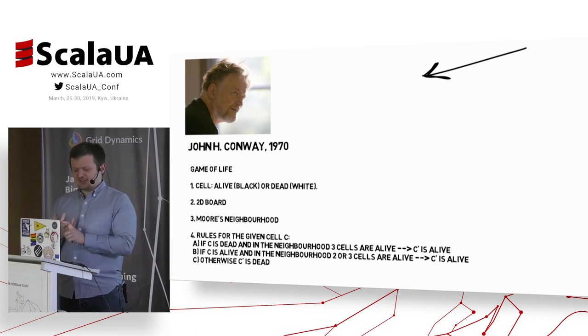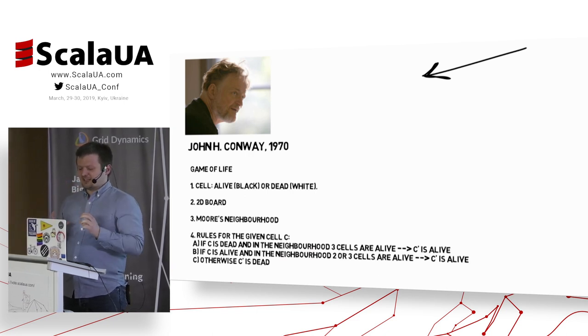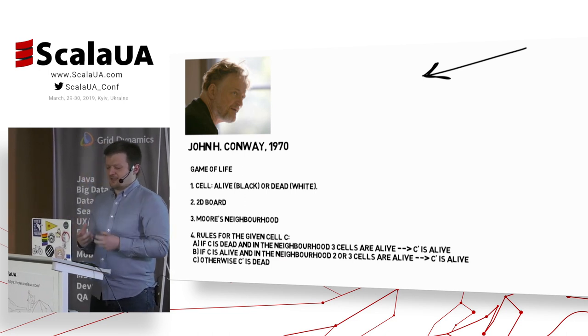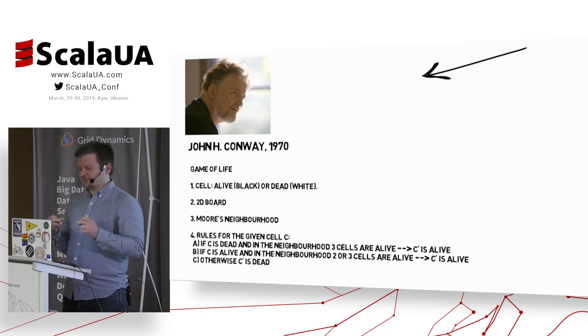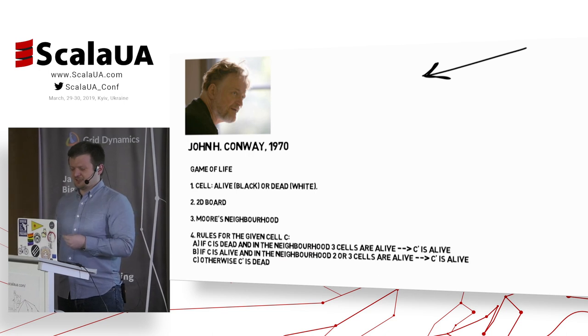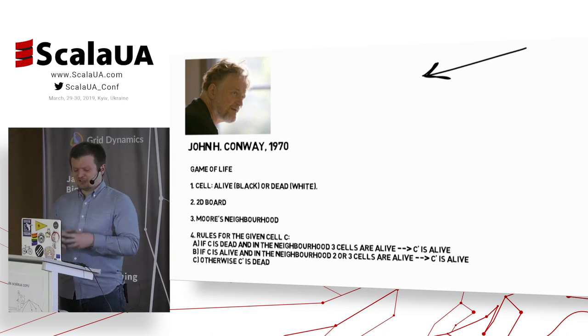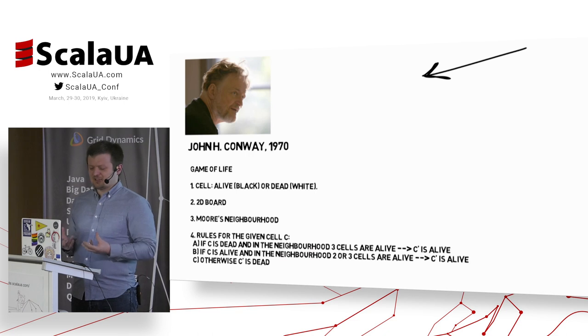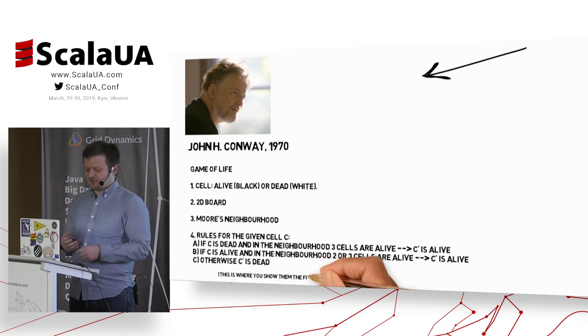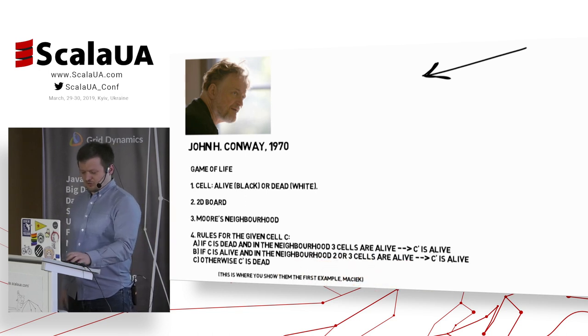And the rules are like that. If the cell is dead, and in the neighborhood there are three cells that are alive, then the new version of that cell will be alive. If the cell is alive, and in the neighborhood we have two or three cells that are alive, the cell will still stay alive in the next iteration. Otherwise, if there are not enough living cells in the neighborhood, or if there are too many living cells, then the next iteration of our cell will be dead because of loneliness or too much crowd.